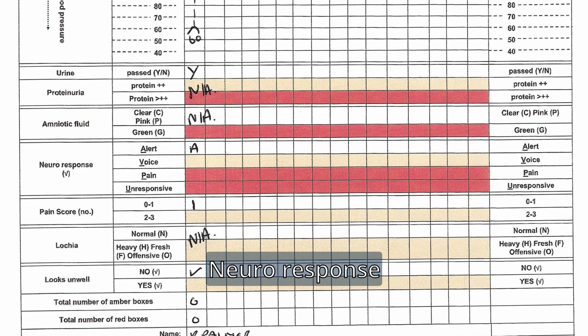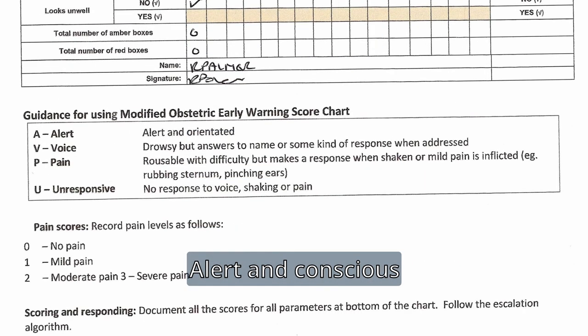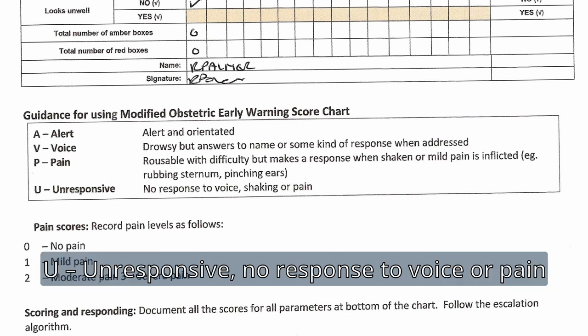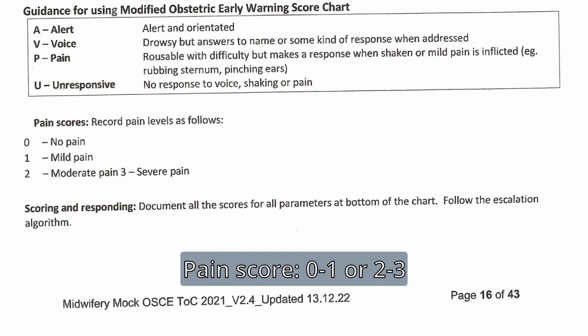Neuro-response is recorded using the AVPU scale: A — Alert and conscious; V — Voice, responds to voice; P — Pain, responds to pain; U — Unresponsive, no response to voice or pain. Pain score is recorded as 0 to 1, or 2 to 3.